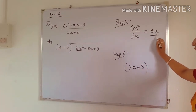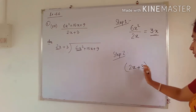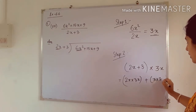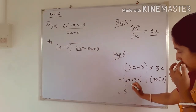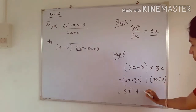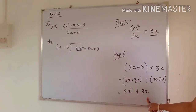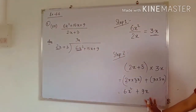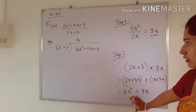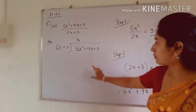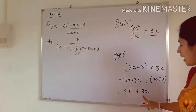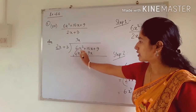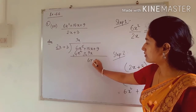We multiply the result 3x by the divisor in step 2: (2x + 3) × 3x = 6x² + 9x. The value 3x is written in the quotient, and 6x² and 9x are written below the corresponding terms of the dividend. After subtracting, 6x² − 6x² = 0, and 15x − 9x = 6x. We bring down the 9, giving new dividend 6x + 9.